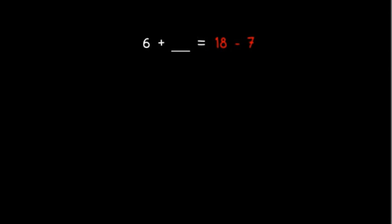So let's begin by finding 18 minus 7. We can count from 18 back 7 ones. 17, 16, 15, 14, 13, 12, 11.